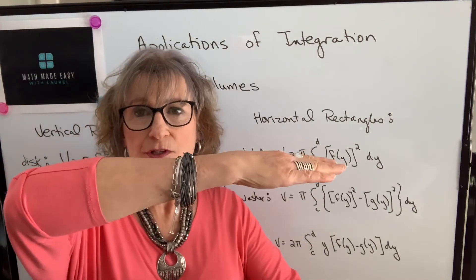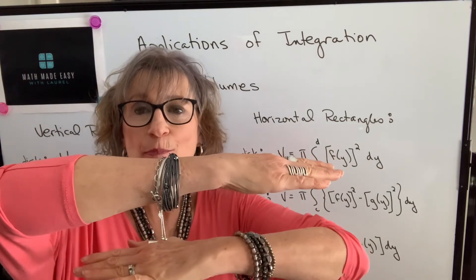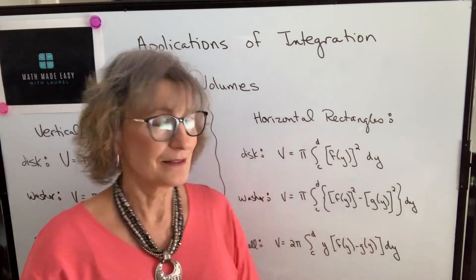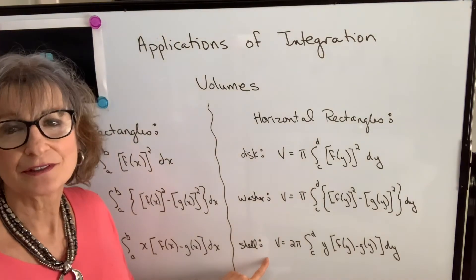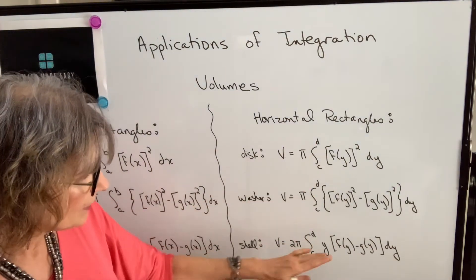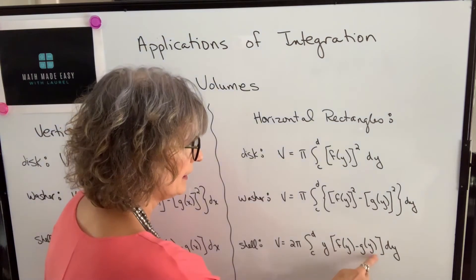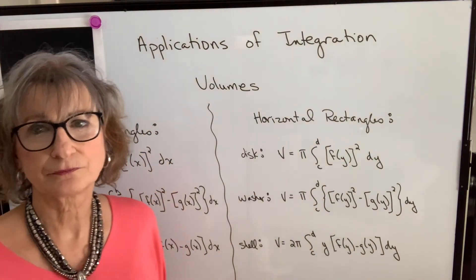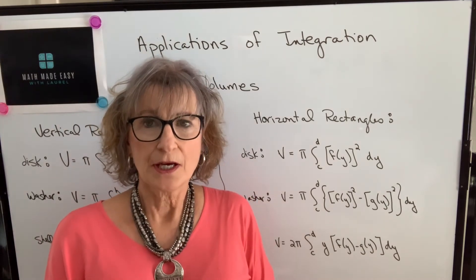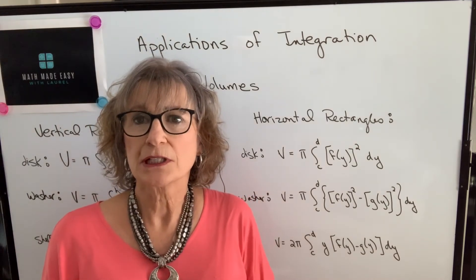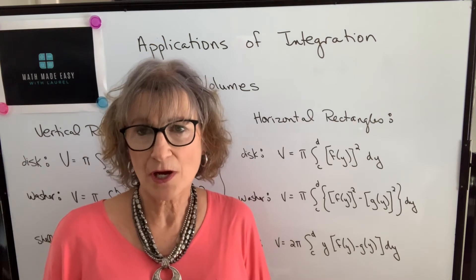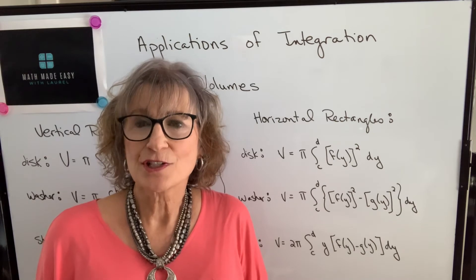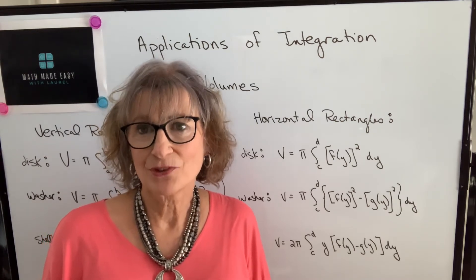If your horizontal rectangles are parallel to the axis of rotation — in other words they're rotating around the x-axis — then you're using the shell method. In all of these, the function is in terms of y and the limit values are y values. If you're working with an area that's rotating around a line other than the x-axis or the y-axis, you will need to choose the rectangle that's parallel to the line it's rotating around and use the shell method.